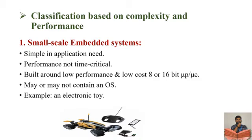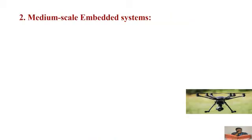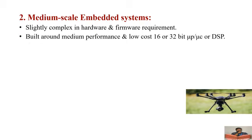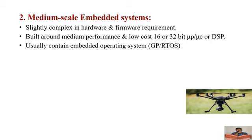Medium scale embedded systems are slightly complex in hardware and software requirements compared to small scale embedded systems. They are built around medium-performance, low-cost 16 or 32-bit microprocessors and microcontrollers, and they even utilize DSP processors. These systems contain an embedded operating system, that is, a real-time operating system, and are used especially in industrial machines.